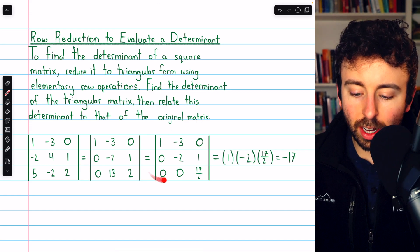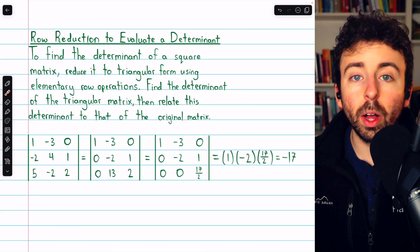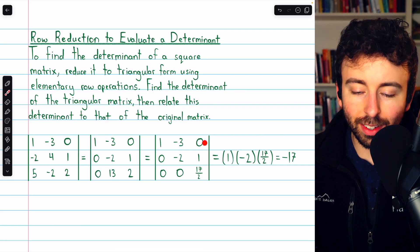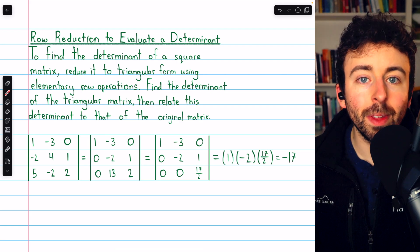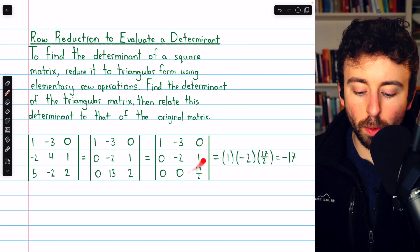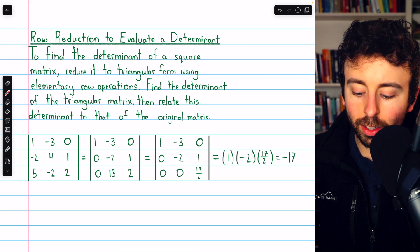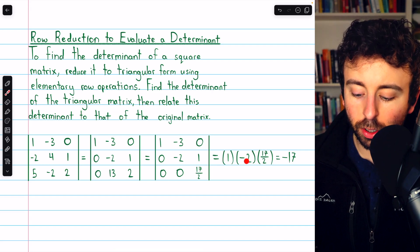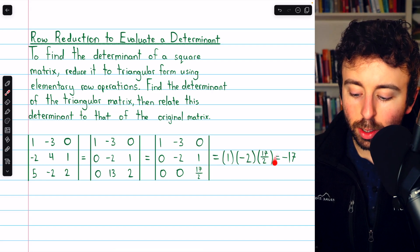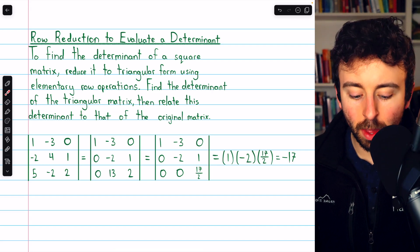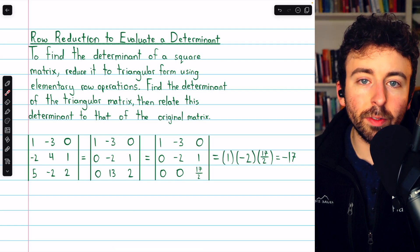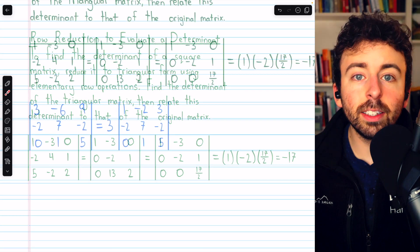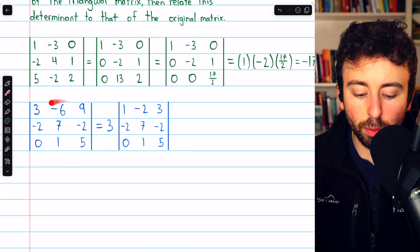Now that it's an upper triangular matrix, well, once again, the determinant is still the same, because all we did was add multiples of one row to another, and now we can evaluate the determinant by simply multiplying along the diagonal. One times negative two times seventeen-halves, so the determinant is negative seventeen. All we did this whole time was add multiples of one row to another, so we never actually changed the determinant.